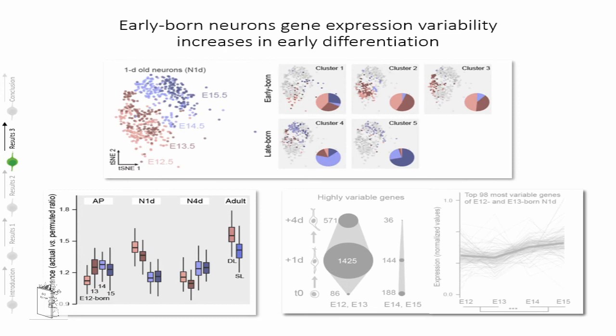As a follow-up, we performed clustering analysis focusing on only the one-day-old neurons. We could identify three main clusters mainly composed of early born cells and two clusters mainly composed of late born cells. Interestingly, while the first three clusters are equally distributed between E12 and E13-born neurons, in the other two clusters the proportion between E14 and E15-born neurons indicates these clusters are mostly representative of time progression. In the first three clusters, we observe variability beyond the actual date of birth, in line with our previous observations.